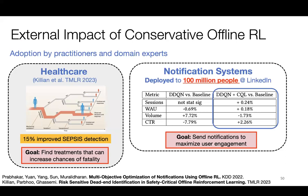People have also utilized these ideas in domains such as healthcare, where the goal is to find treatment strategies that may lead to faster recovery. One paper — not mine — considered the problem of finding treatments that may reduce chances of fatality, specifically dead-end detection for sepsis. They found that using existing patient data and running conservative offline RL methods yields up to a 15% improvement in dead-end discovery for sepsis detection. These methods have also been deployed in notification systems at LinkedIn, used by over a hundred million people, where policies dictate when to send versus not send a notification.